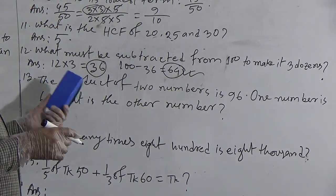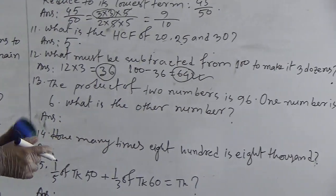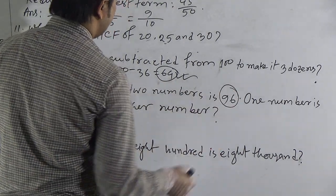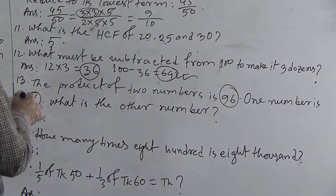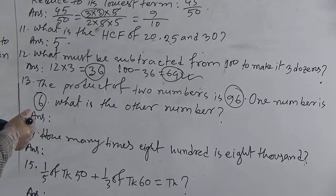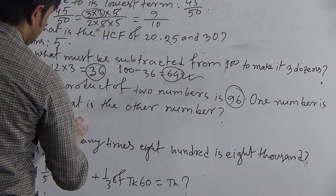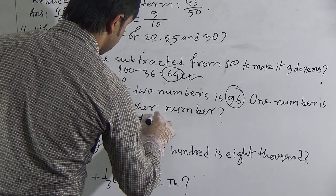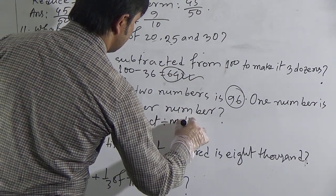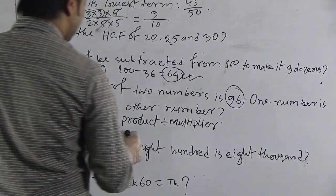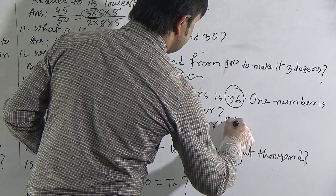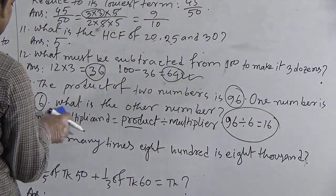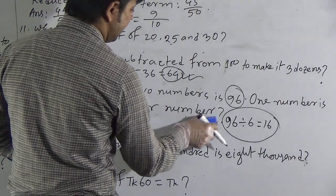Question 13: The product of two numbers is 96. One number is 6. What is the other number? The product is given and the multiplier is given, so we need to find the multiplicand. The formula is: multiplicand = product ÷ multiplier. Dividing 96 by 6 gives 16. Our required answer for question 13 is 16.